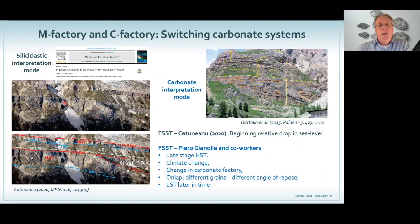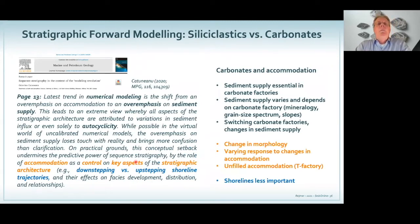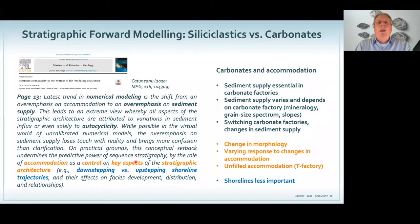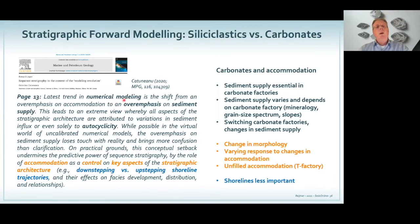So the onlap that Catuneanu showed as typical of falling-stage systems tracts is much more complex in carbonates. It's a carbonate factory thing — it's a climate change, a change in the carbonate factory itself. That's why high-stand shedding is not the same all the time. When you expose a platform it may have another cause — when you affect the carbonate producers, it may relate to different types of sediment input in the basin itself.